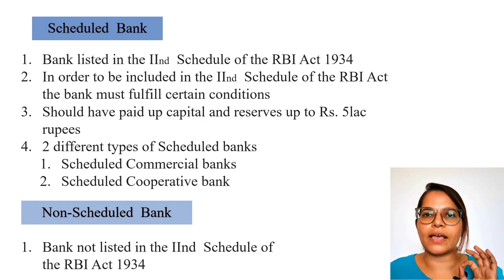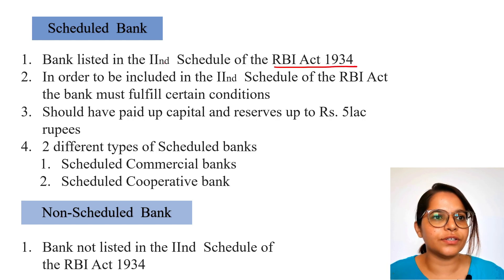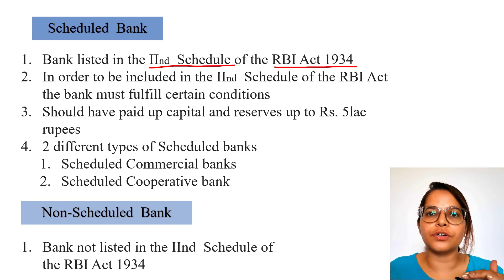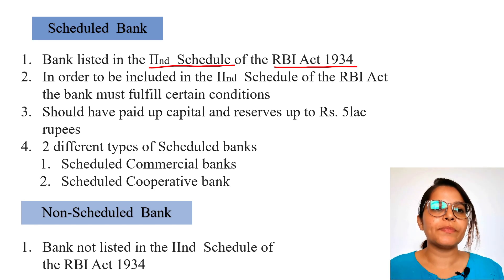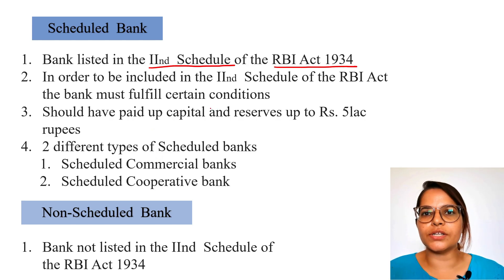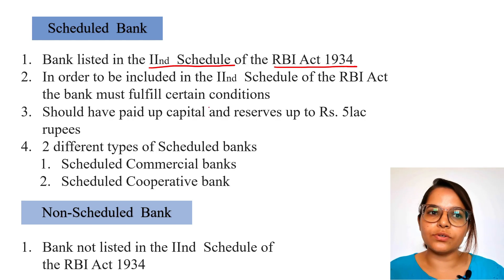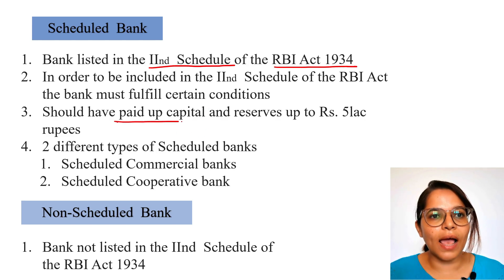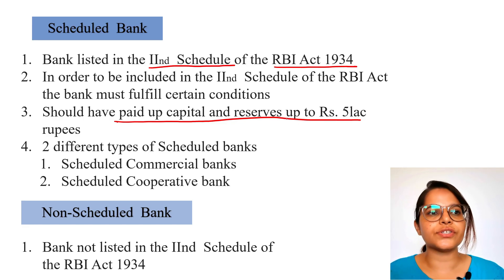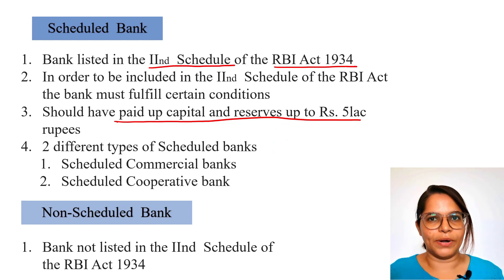As you can see on the slide, scheduled banks are those listed in the Second Schedule of the RBI Act 1934. To be included in the Second Schedule, a bank must fulfill certain conditions. One of those conditions is having a paid-up capital and reserves of up to 5 lakh rupees, along with various other conditions. Scheduled banks can be further classified into two categories: scheduled commercial banks and scheduled cooperative banks.